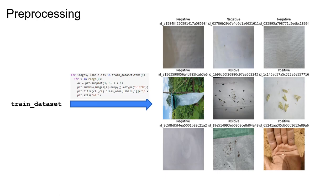We can see three pieces of information for each image: first, the image itself resized to 512 by 512 pixels; second, the label indicating whether it is a positive or negative image; and third, the image ID.